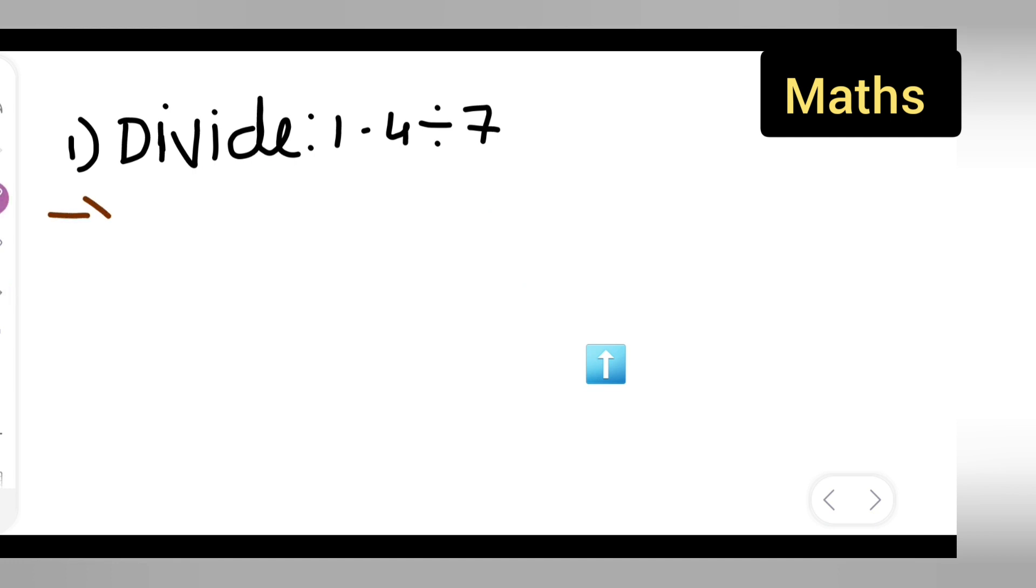First, what you'll have to do is write down 1.4 divided by 7. Now basically, this is equal to 1.4 multiplied with the reciprocal of 1 upon 7.